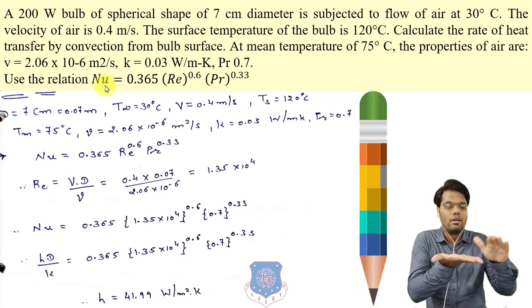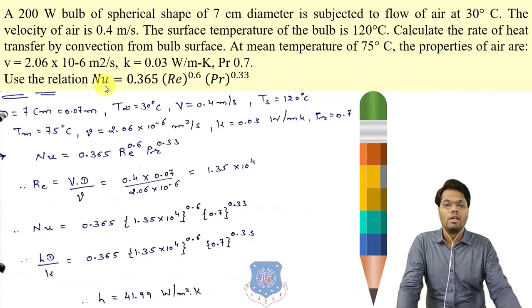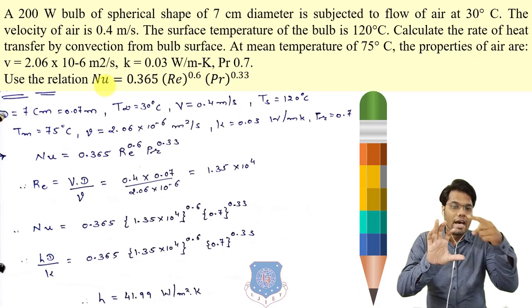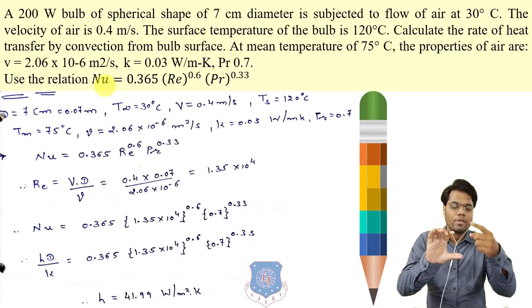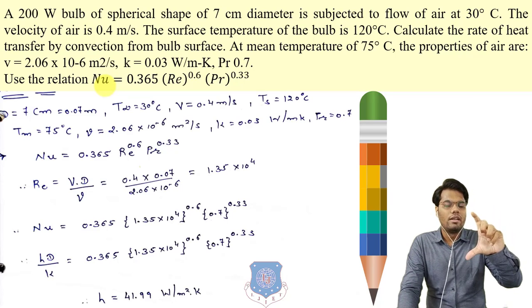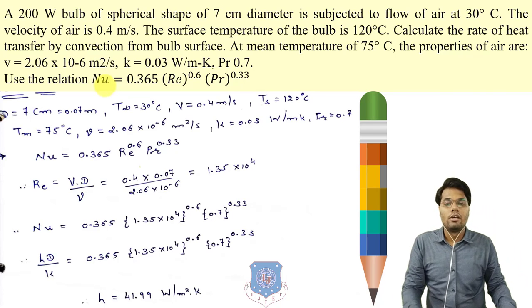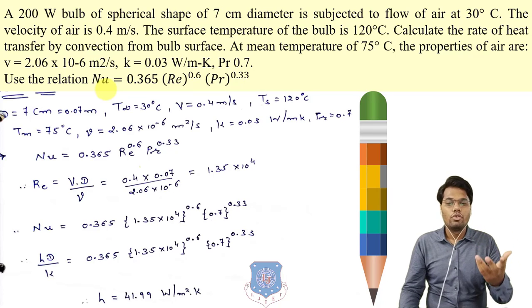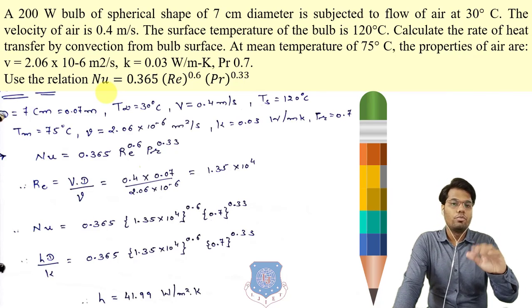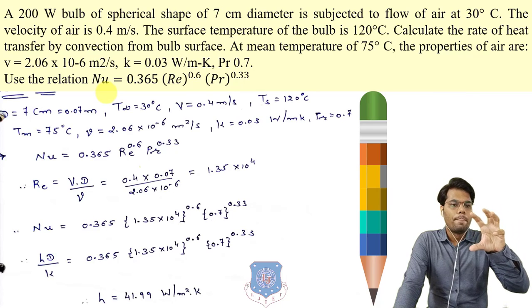For a horizontal plate, the characteristic dimension is the plate length. For a pipe with internal flow, it is the pipe diameter. For a vertical cylinder, it is the height. The characteristic dimension changes depending on the geometry and orientation of the system. In our numerical, the bulb is spherical, so the diameter of the bulb is the characteristic dimension.